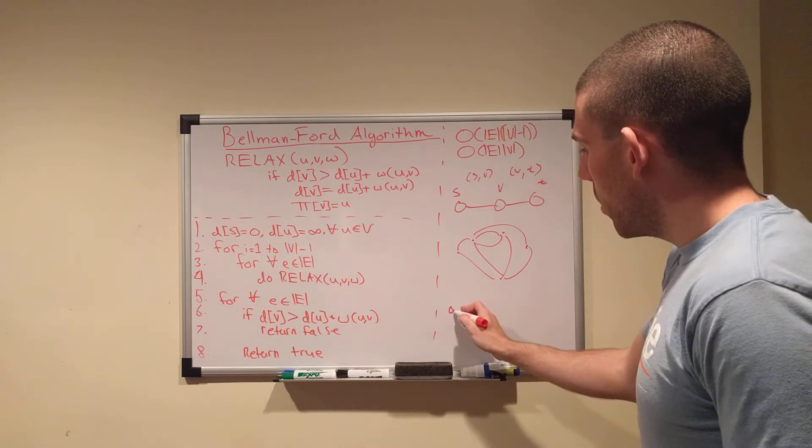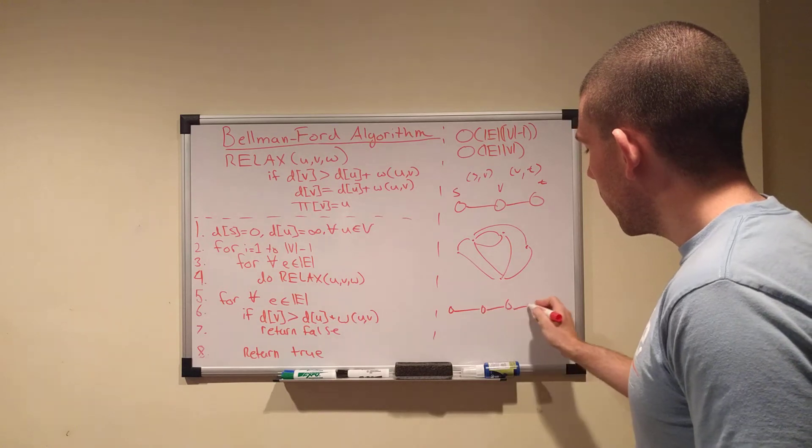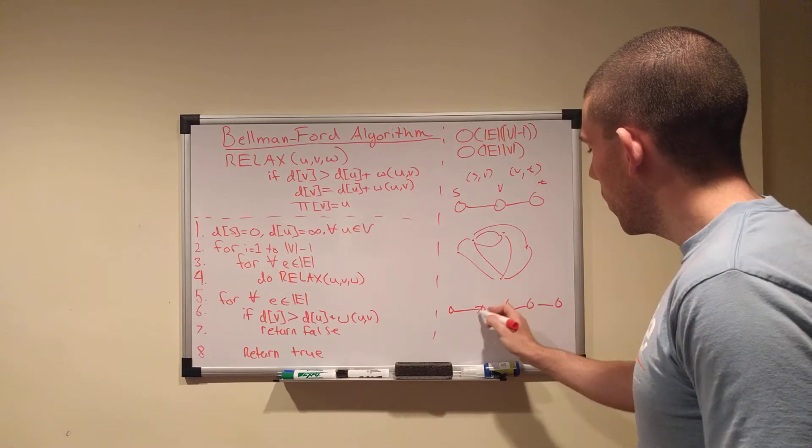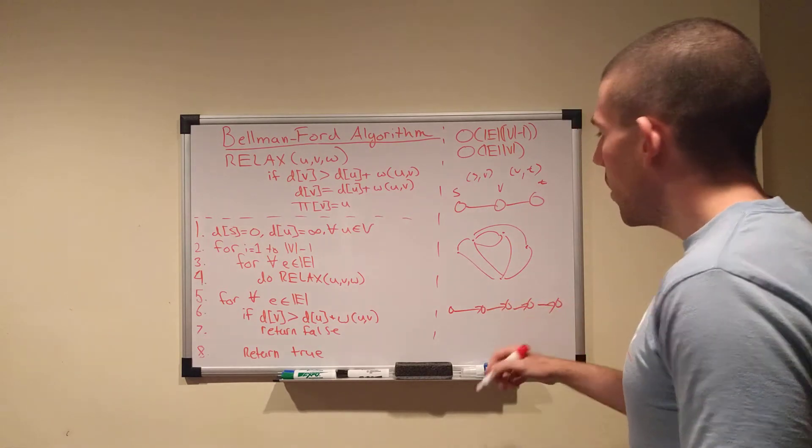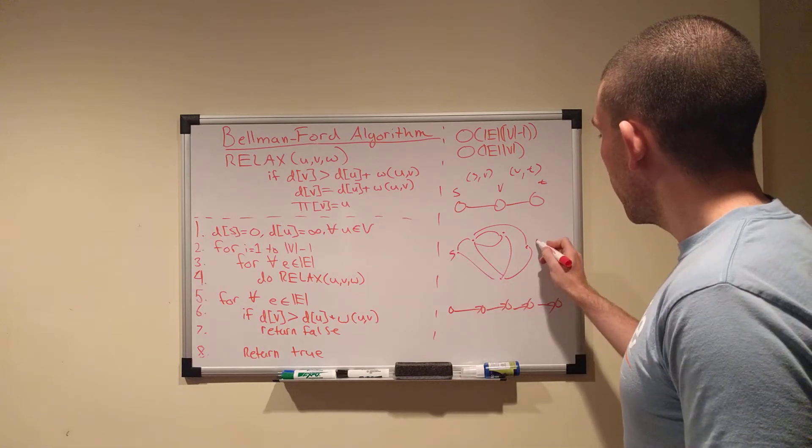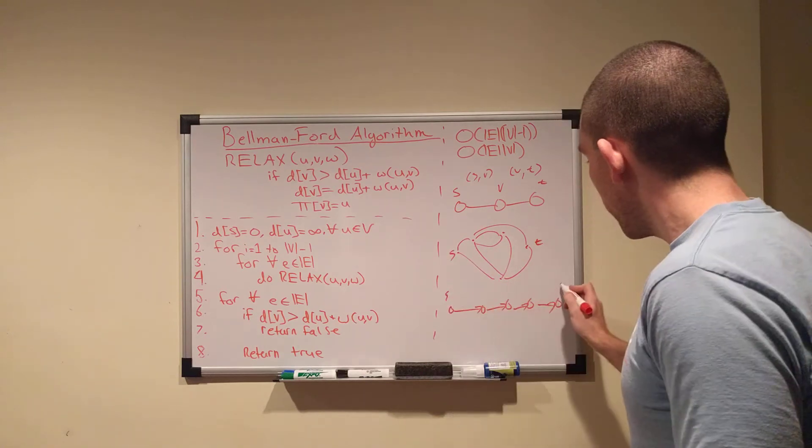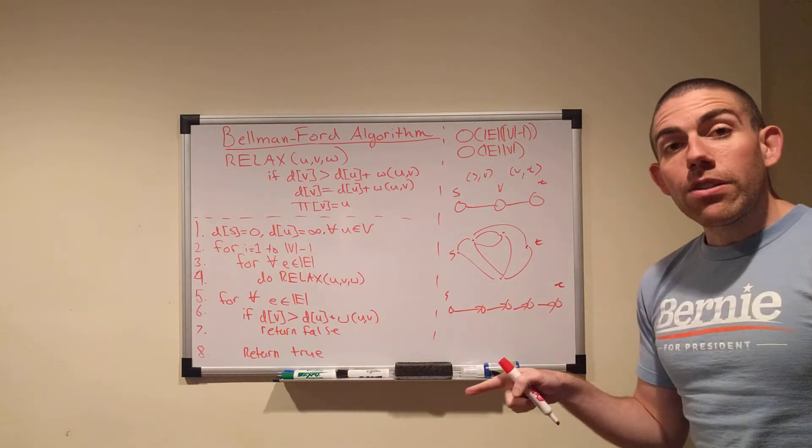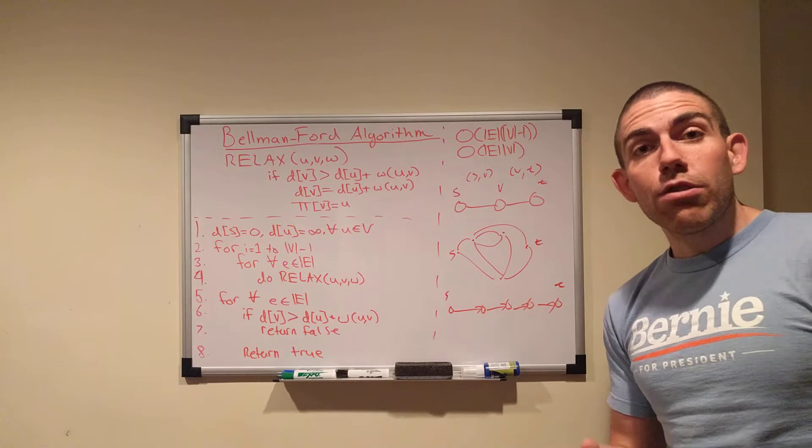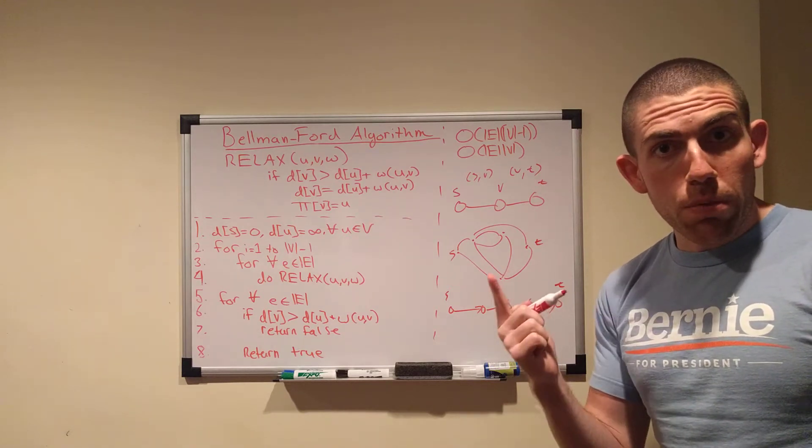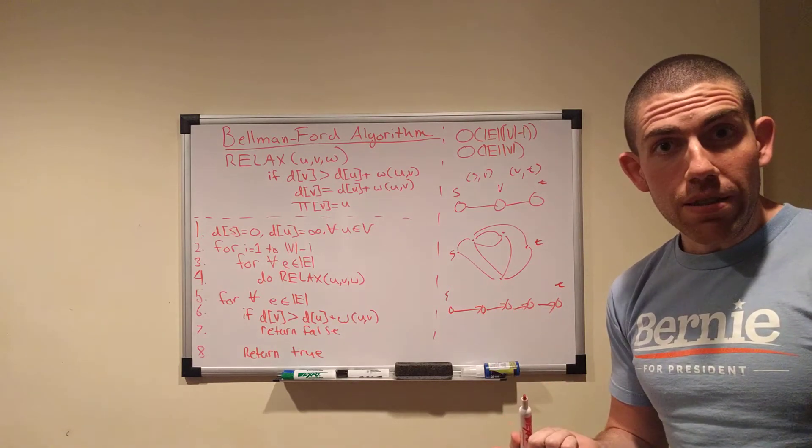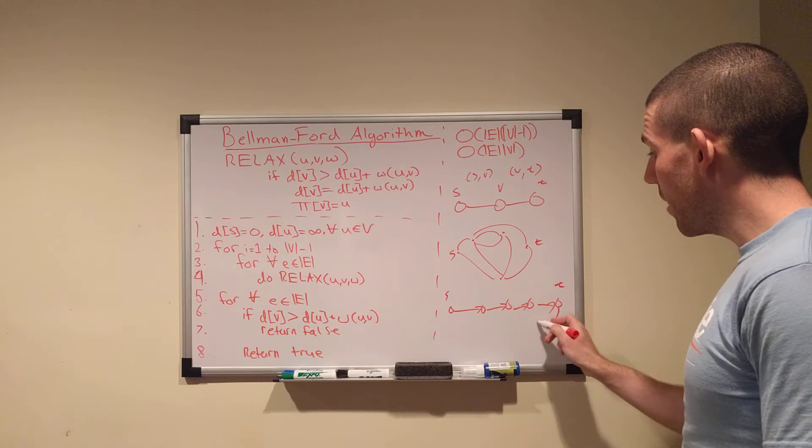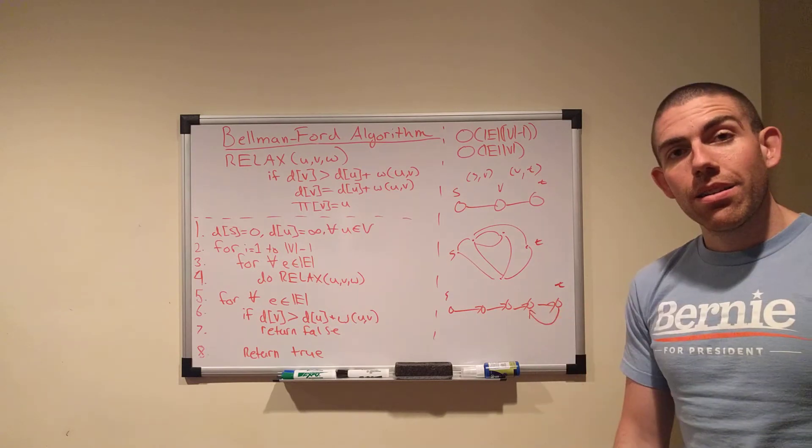Then, the shortest path is still only going to contain V minus 1 edges. It has to. So, if you think about it, you've got 1, 2, 3, 4, 5. Let's say that this is S, and this is T. And we have S, and we have T. The shortest path is going to contain four edges, because it must. If it contains more than four edges, even one more than four edges, then what do you get? You get something like that. A cycle.